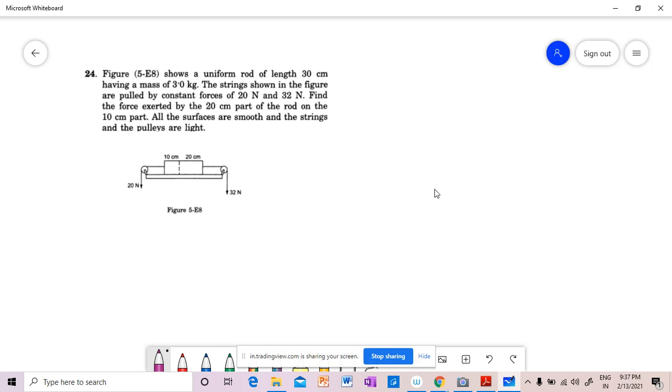Question में बोल रहा है, figure shows a uniform rod of length 30 cm, having a mass 3 kg. The strings shown in the figure are pulled by constant forces of 20 N and 32 N. Find the force exerted by 20 cm part of the rod on the 10 cm part. All the surfaces are smooth and the strings and pulleys are light.